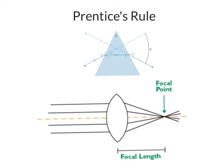This video is about Prentice's Rule. So I have a picture of a lens here and a picture of a prism. These two are totally different. A lens has a focal point, a prism does not.